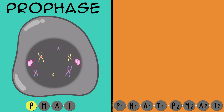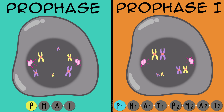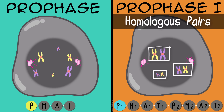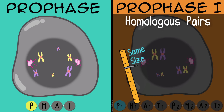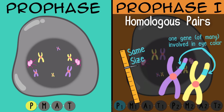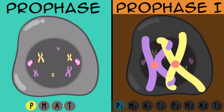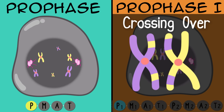Prophase in mitosis—remember that 'pro' can mean before, and this stage comes before the others. The chromosomes are visible; we say they're condensing, which means they are thickening. Prophase 1 in meiosis is happening too, but the chromosomes are actually going to match up with their homologous pairs. Homologous means the chromosomes are approximately the same size and contain the same types of genes in the same locations—one came from mom and one came from dad. In this formation, chromosomes can transfer and exchange genetic information between each other—it's called crossing over—which can make what we call recombinant chromosomes.